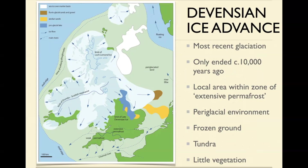Our local area was within what's called an area of extensive permafrost. That means the ground is frozen — it is bitterly cold — and frozen to some depth. Essentially it's tundra, whether or not you've got mammoths wandering around at the peak of this is another matter. But certainly as it built up or went away, there would have been at peak time very little vegetation for a mammoth or indeed anything else to eat.